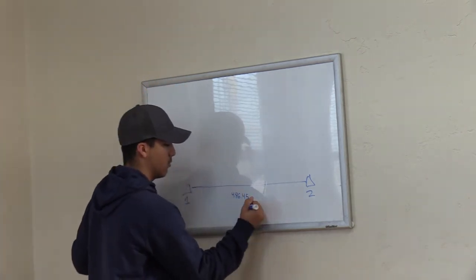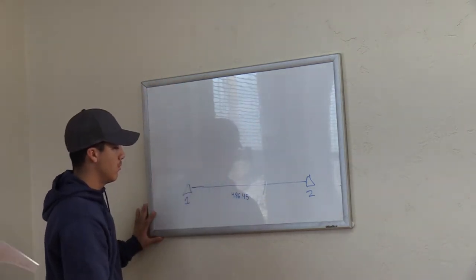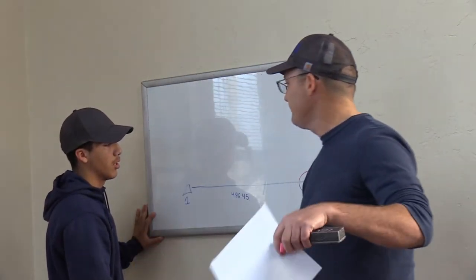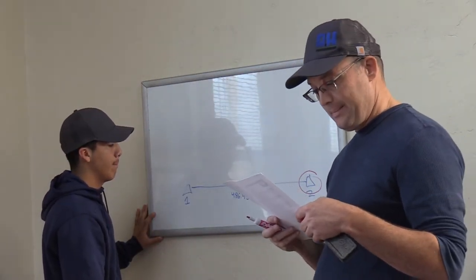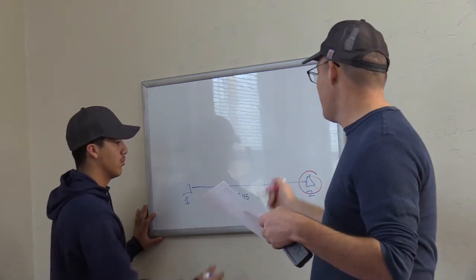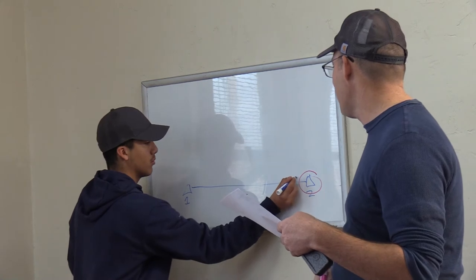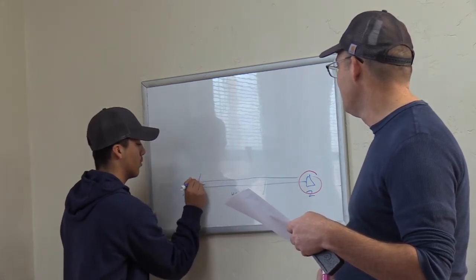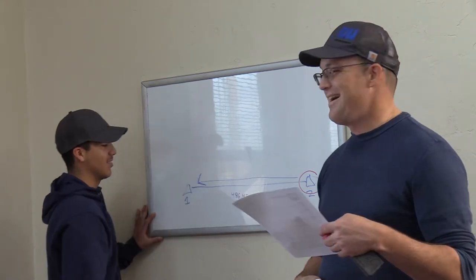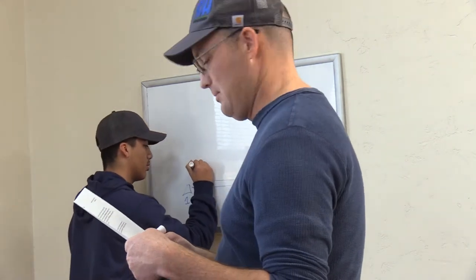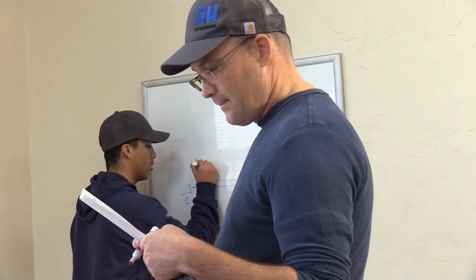Okay. A total station is set up at RH control point number two. So I'm just going to circle it so we remember where the gun's at. Alright. And a backsight is taken to control point number one. So Angelo just draws an arrow pointing that direction so we know which way our backsight's going. I don't know what kind of arrow that is, but we'll take it. Alright. So we backsight number one. Put BS on top of the arrow so we know that's our backsight.